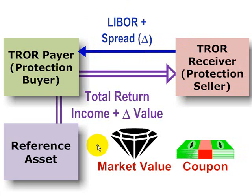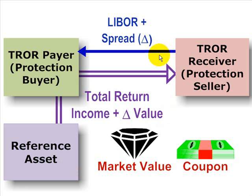One thing to note: what if the market value of this underlying obligation actually depreciates instead of appreciates? Well, in that case, the receiver is going to pay that depreciation to the payer, because the payer has essentially transferred both credit and price risk to the receiver.